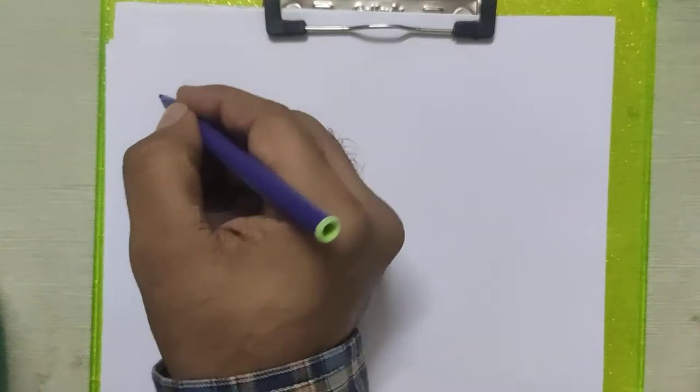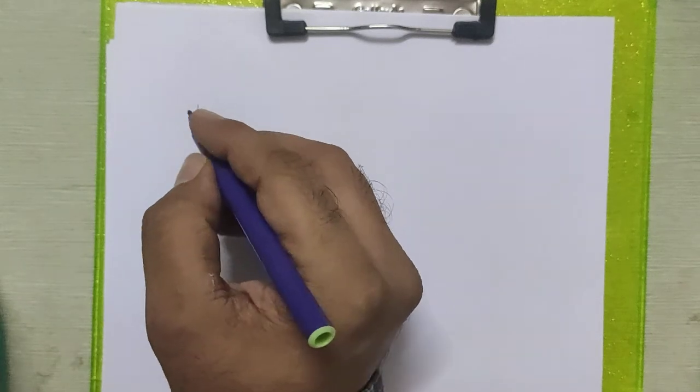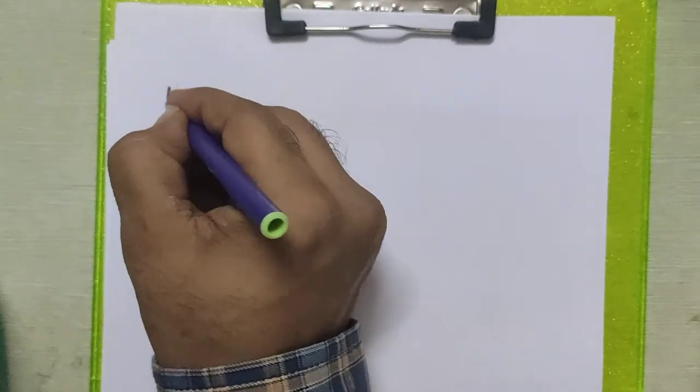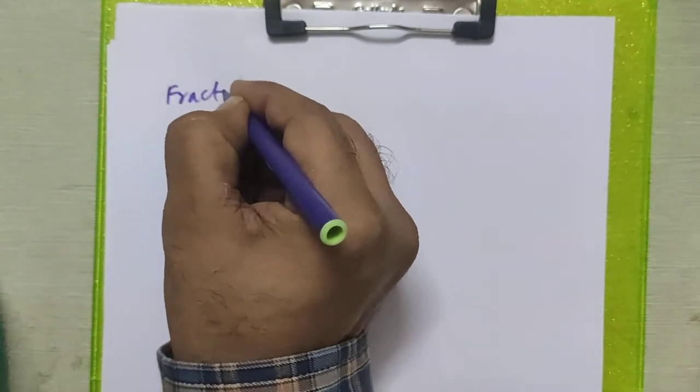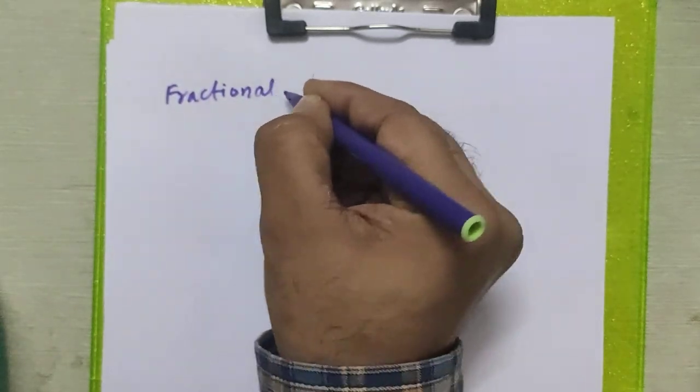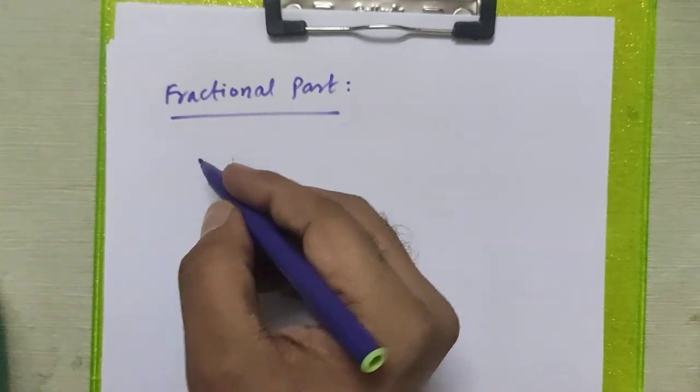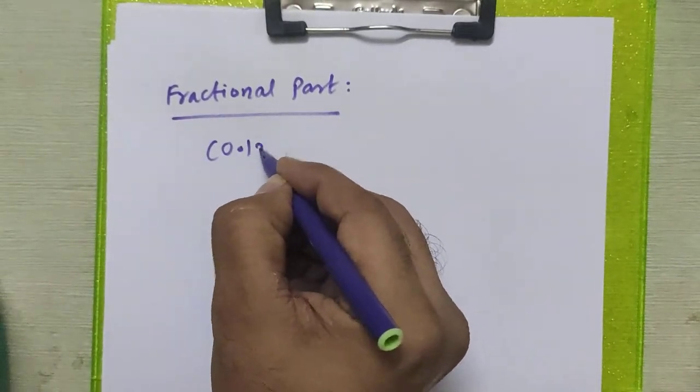Now we will see the procedure for converting any decimal number having fractional part to octal. So the fractional part given in the problem was 0.125.